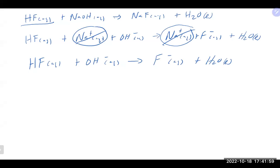If all ions cancel out, there would be no reaction because nothing comes together — no solid forms and no water is made. You basically just have ions floating around. We did an example in the notes where everything canceled out, and essentially the result is no reaction.